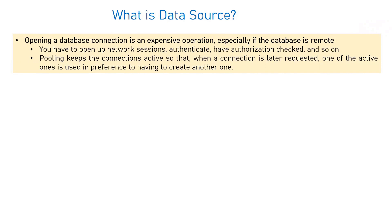The application connects with the database, logs in with the username and password defined in our data source, and once everything is good, the connection is established. This is kind of an expensive operation. Every time you go to the database and create a new connection, data transfers over the network, you get authenticated, and then the connection is established. This can degrade the performance of your application if it goes through the same process every time.